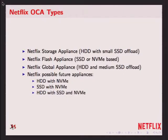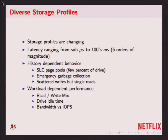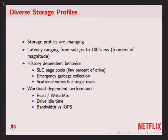The important thing to note here is that we're looking at having boxes with three different performance classes of storage. Hard disks operate at about 10 to 100 milliseconds in terms of the time it takes them to process events, depending on how loaded they are and how big the transfers are. The fastest NVMe drives can be microseconds. So that's four, five, or six orders of magnitude in speed differential of storage, all in the same box.